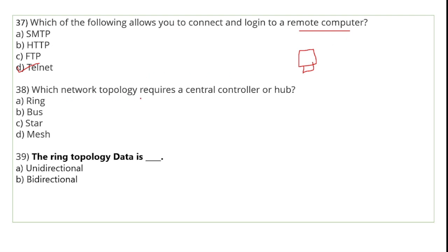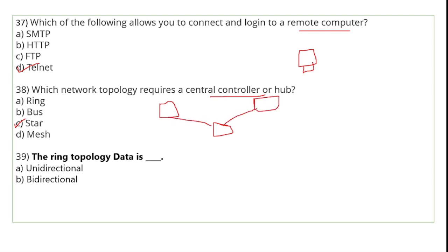Which network topology requires a central controller and hub? Star topology requires a central controller. In star topology, all nodes are connected to a central controller, which can be a switch or hub.